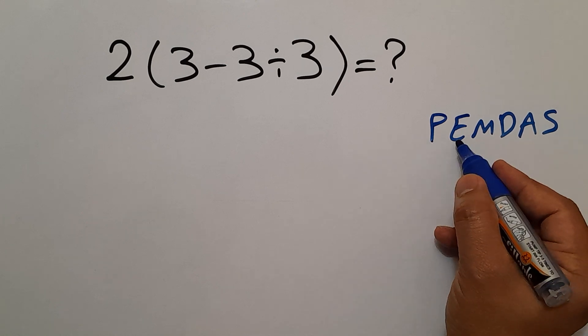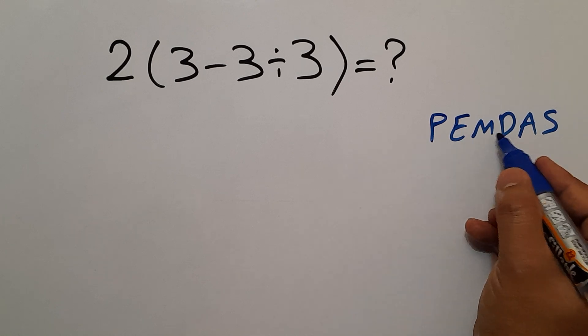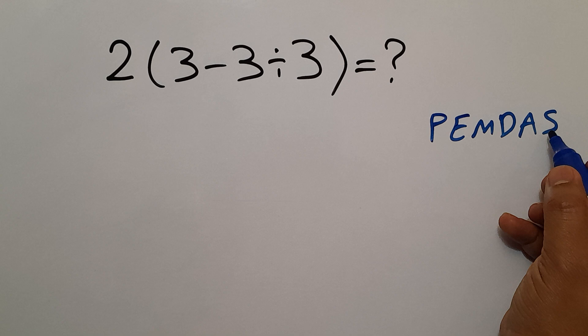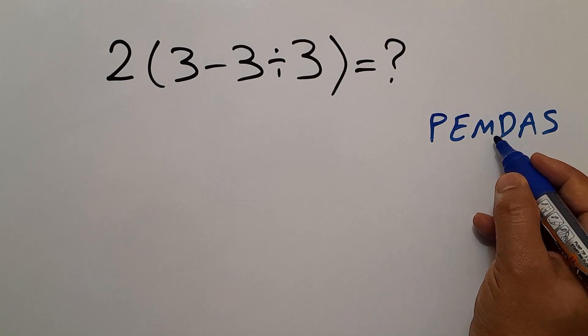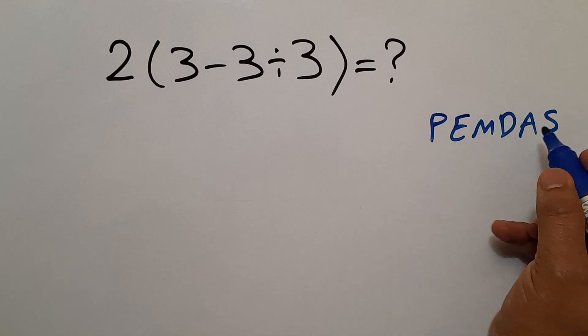We first do parentheses, then exponents, then multiplication and division, and finally addition and subtraction. Remember that multiplication and division have equal priority and we work from left to right. And the same goes for addition and subtraction.